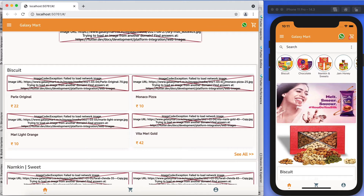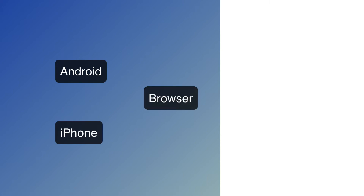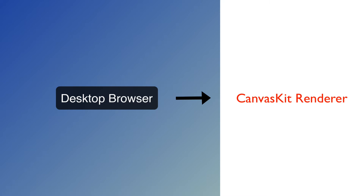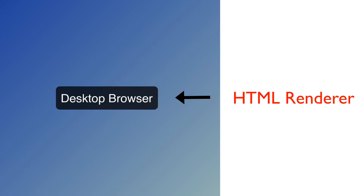So why is this happening on web only? The reason is simple. When we work on Android or iPhone, we are using the mobile browser, which uses the HTML renderer. When we use a desktop browser, it uses the CanvasKit renderer. There is a new update — we need to use the HTML renderer for the desktop browser as well, and that is why we are getting this error.